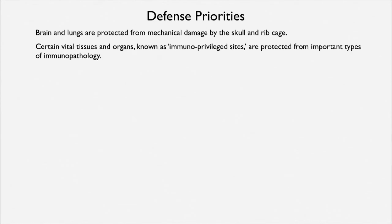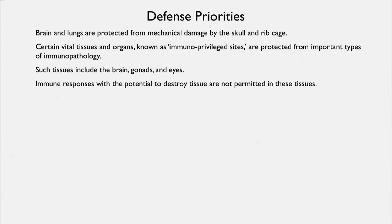Brain and lungs are protected from mechanical damage by the skull and rib cage. Certain vital tissues and organs are immunoprivileged — that is, they're protected from immunopathology; they don't have some of the reactions that lead to immunopathology. Brain, gonads, and eyes are all immunoprivileged. The immune response has the potential to destroy tissue, and that kind of response is simply not permitted in brain, gonads, and eyes.